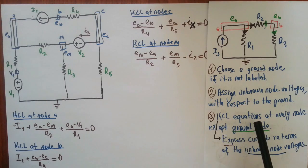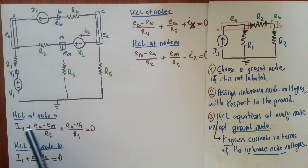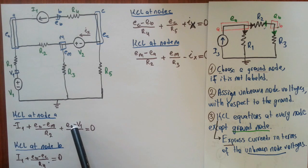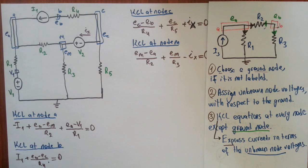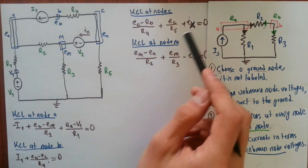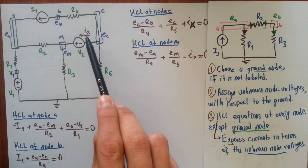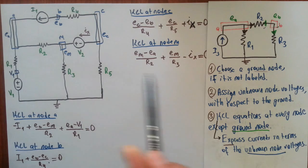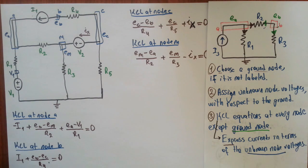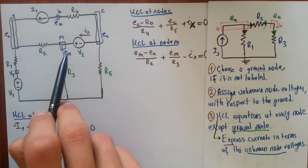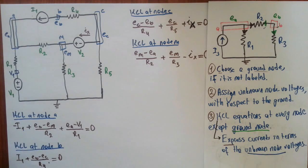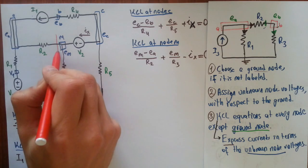The key point of KCL equations is to express currents in terms of unknown node voltages. In the KCL equations for nodes A and B, all currents are expressed in terms of unknown node voltages. But in the equations for nodes C and M, we couldn't express Ix in terms of unknown node voltages. To avoid this unnecessary variable labeling, there is a method called super node analysis.